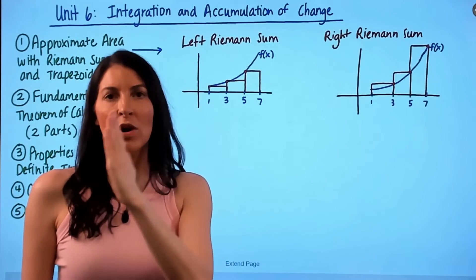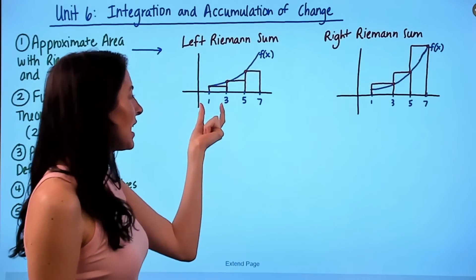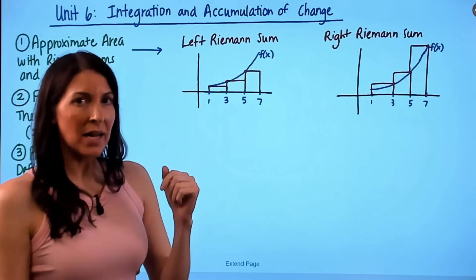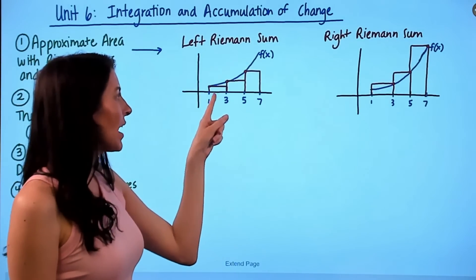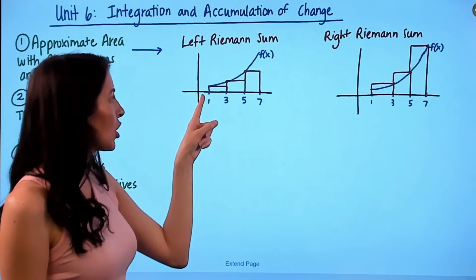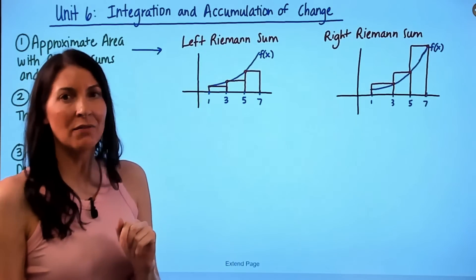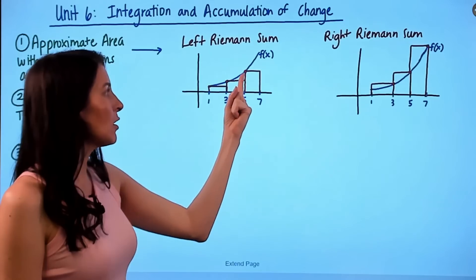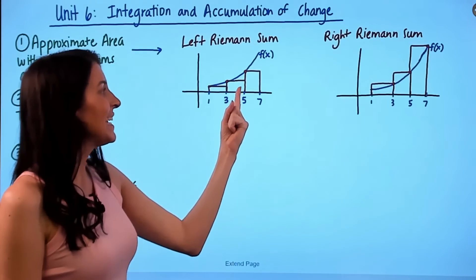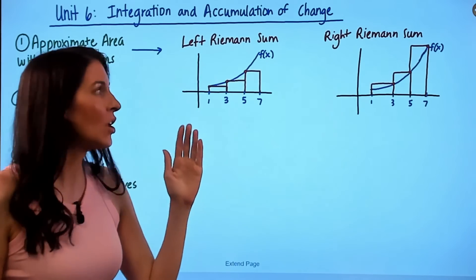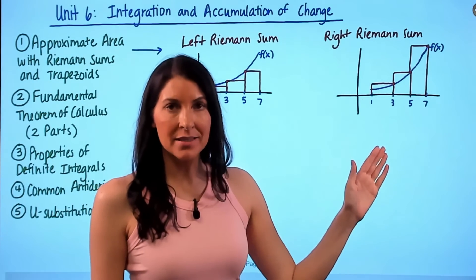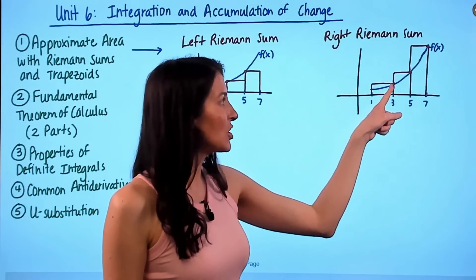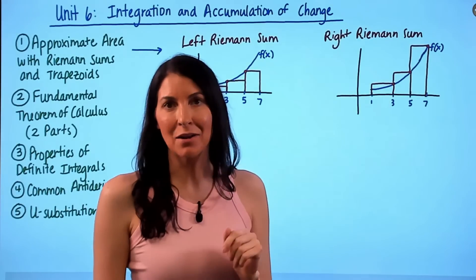Over the interval from one to seven with three rectangles, each base has a length of two. A left Riemann sum has each rectangle's height determined by the height on the left side of the rectangle — you can see all heights are determined by where the function connects to the rectangle on the left end. Whereas in a right Riemann sum, the height of each rectangle is determined by where we attach to the function on the right side.